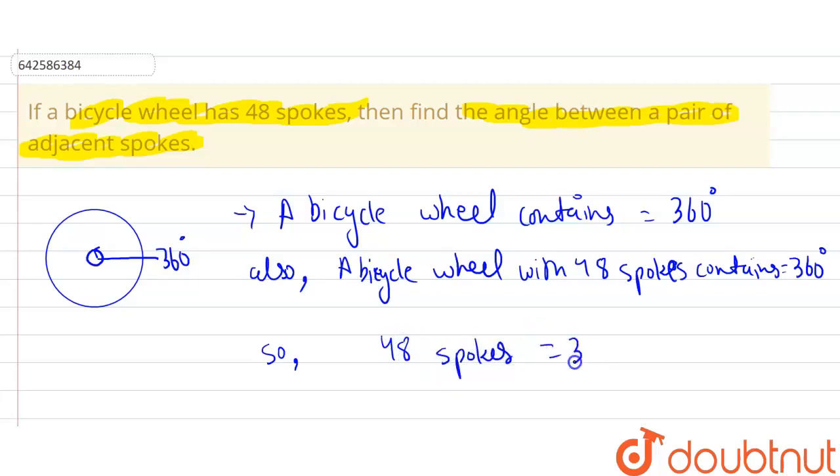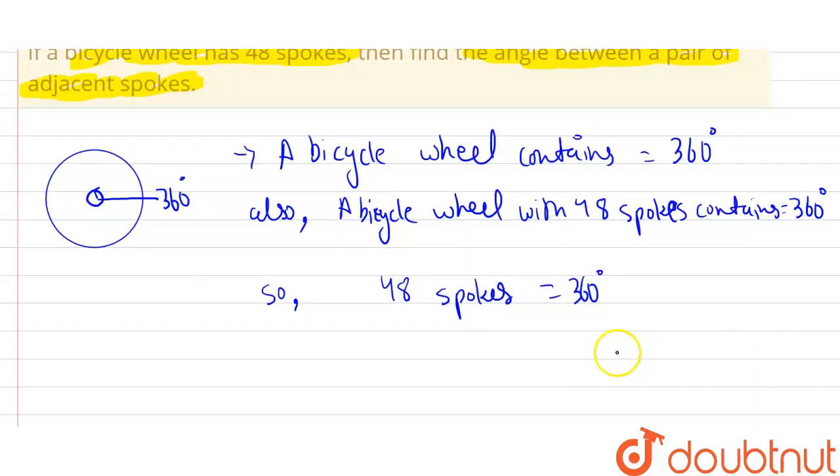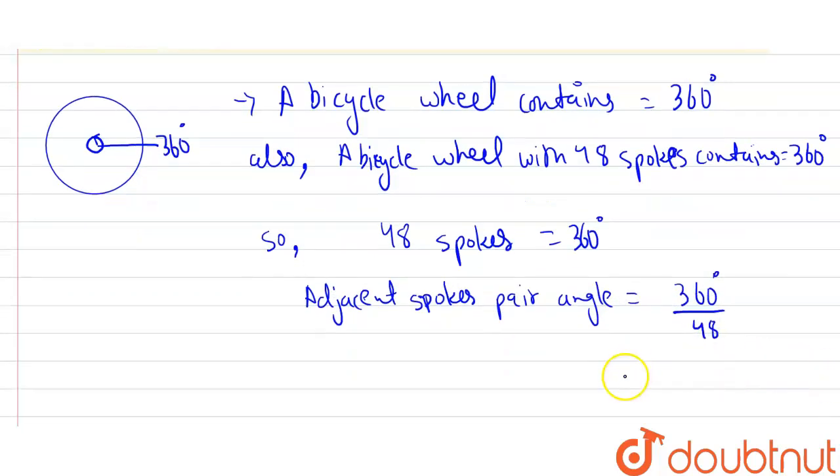So we can write it that 48 spokes equals to 360 degrees. Now, adjacent spokes pair angle will be 360 degrees divided by 48.